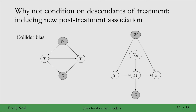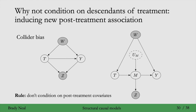This is actually why we waited until after we defined SCMs, because now we have this unobserved variable u sub m, which was key here because it's what created the v-structure, or immorality. So to avoid inducing new post-treatment association, a common rule to follow is just don't condition on post-treatment covariates. This rule you'll see everywhere, even in the potential outcomes literature, and this is exactly what the second part of the backdoor criterion states.